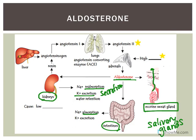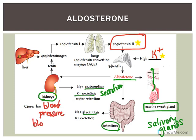How is aldosterone regulated? One major stimulus is high potassium levels. Since aldosterone increases potassium secretion and excretion, it's a way of getting potassium levels back to normal. Another major stimulus is angiotensin 2. Angiotensin 2 increases the production of aldosterone and has other effects we'll discuss with the cardiovascular and urinary systems. Low blood pressure or low blood volume causes the kidneys to produce renin.